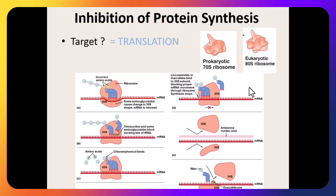There are many ways these drugs disrupt translation: some cause incorrect amino acids to be brought in; some prevent transfer RNA from attaching so no amino acids enter; some prevent amino acids from linking together into a chain; some prevent mRNA from threading through the ribosome; some prevent the ribosome from attaching to mRNA at all. Ultimately, if bacteria can't make proteins — enzymes and structural materials — they cannot survive.